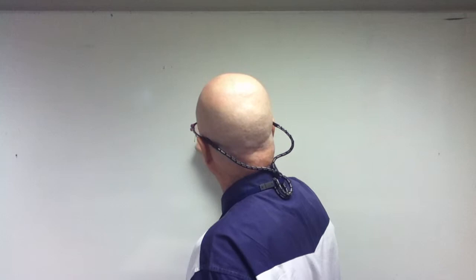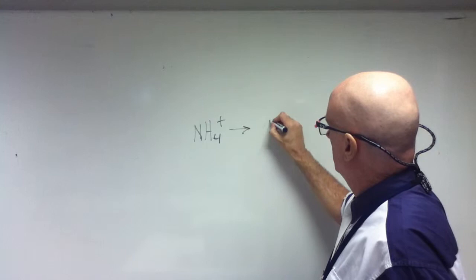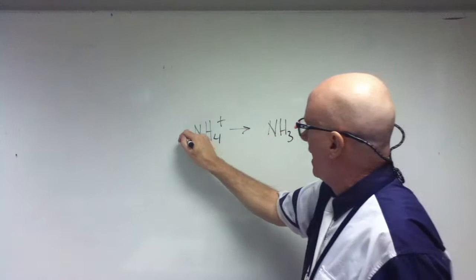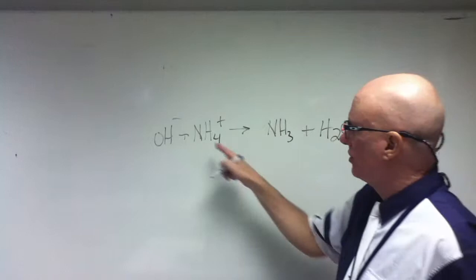For instance, that's an acid — it's going to donate a proton to water. You're going to have that in there with OH⁻, and you're going to donate a proton to the OH, and you're going to get that. So that's a Brønsted-Lowry acid — it's donating a proton.